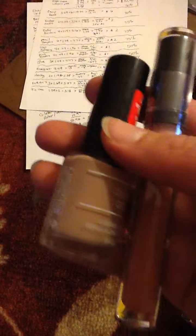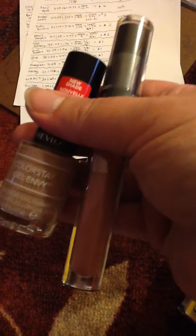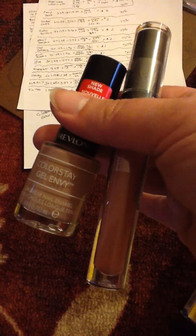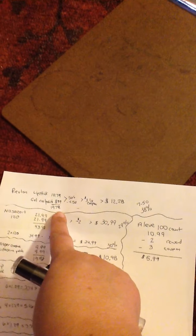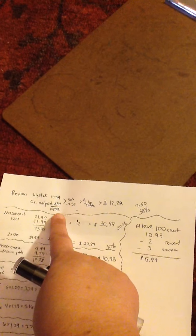There is a coupon in the circular for buy one Revlon lipstick for $3 off. At Walgreens the lipstick is $10.79. The nail polish is $3.99.